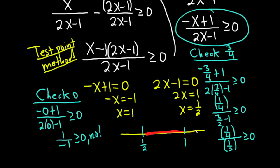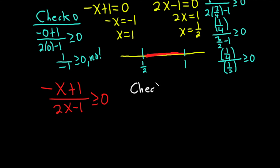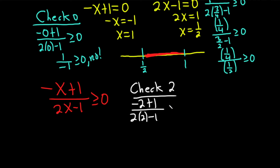Finally, we check a number bigger than 1. Testing x equals 2: negative 2 plus 1 over 2 times 2 minus 1 gives negative 1 over 3, which is not greater than or equal to zero. So we don't shade to the right of 1.